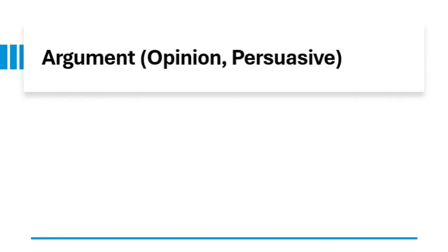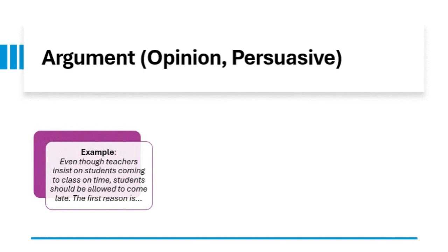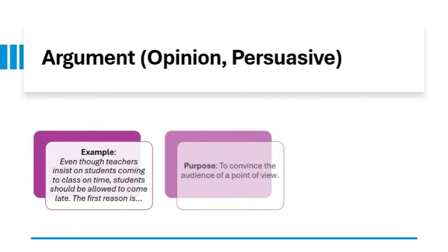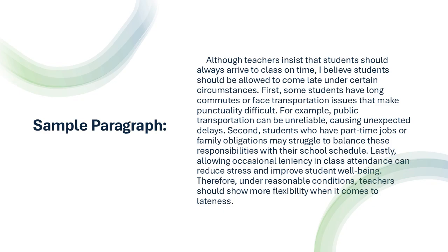Argument, also known as opinion or persuasive writing, is all about convincing the reader to agree with your point of view. This structure works well when you're making a case for something. For instance, you might argue that students should be allowed to arrive late to class due to transportation issues or personal responsibilities. To be persuasive, you'd offer logical reasons and back them up with examples or evidence to support your position. This paragraph illustrates the options or pro-con style of organization, where multiple perspectives are presented to support an argument advocating for a flexible lateness policy for students under certain conditions.